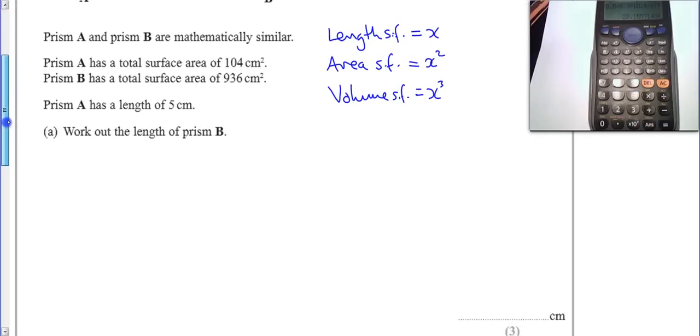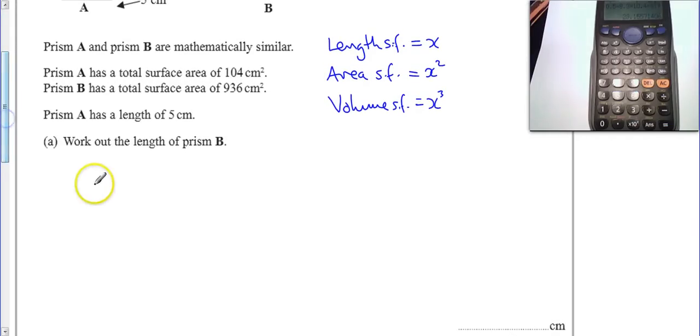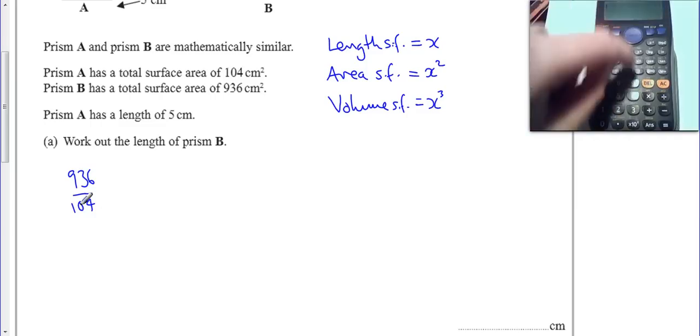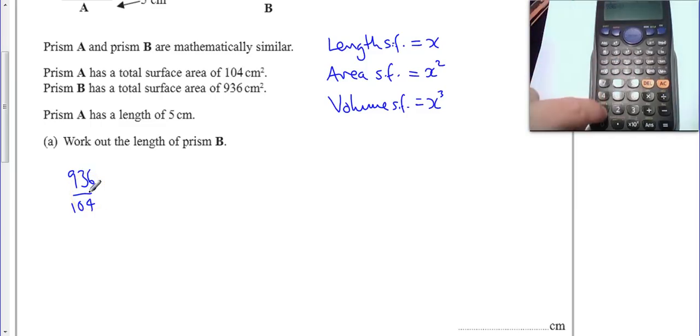So let's work out how to get from one to the other. If we do 936 divided by 104, good old calculator, 936 divided by 104, well that's very convenient, it comes out as 9.